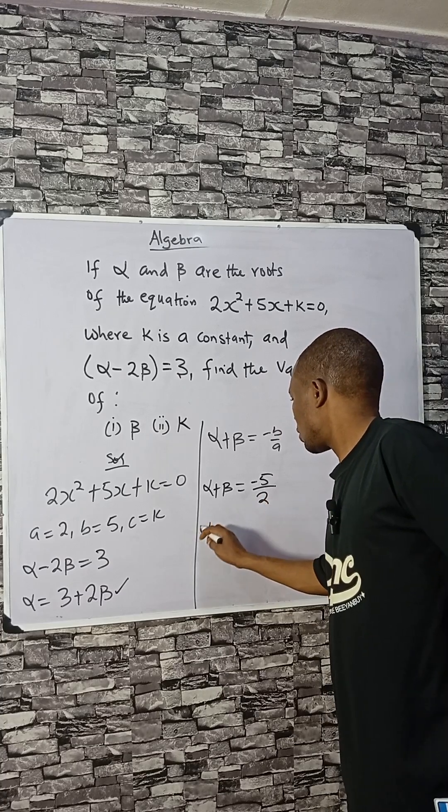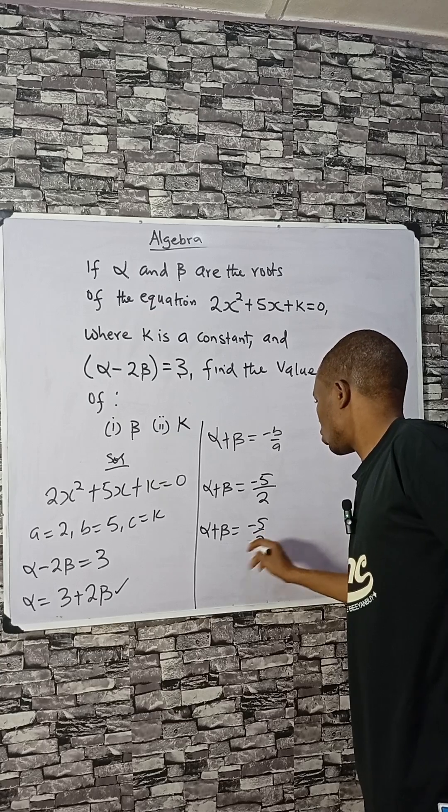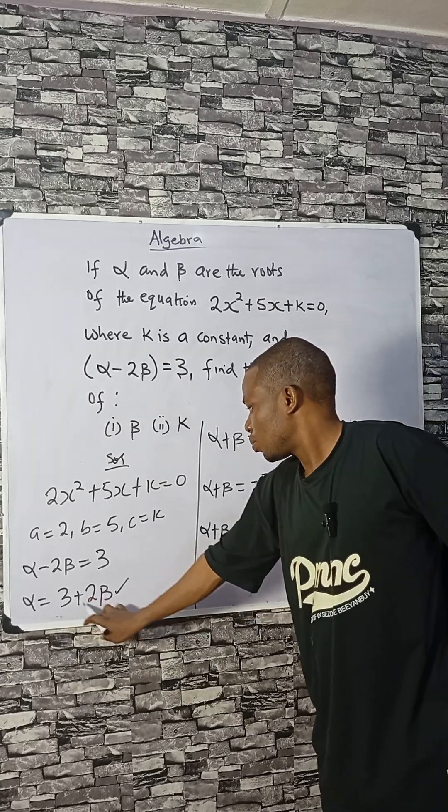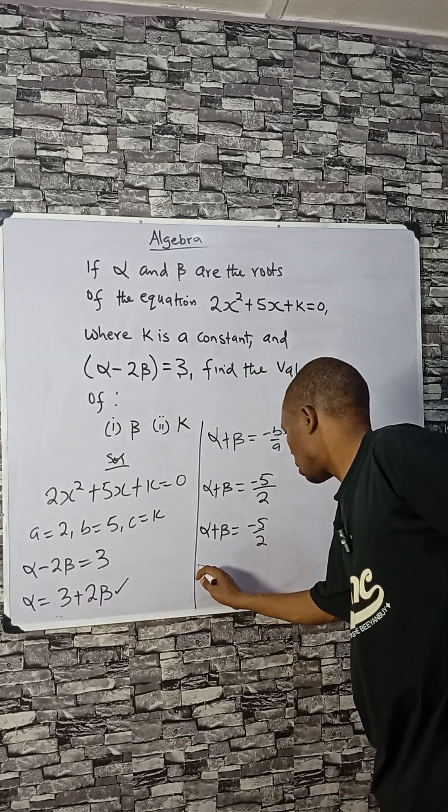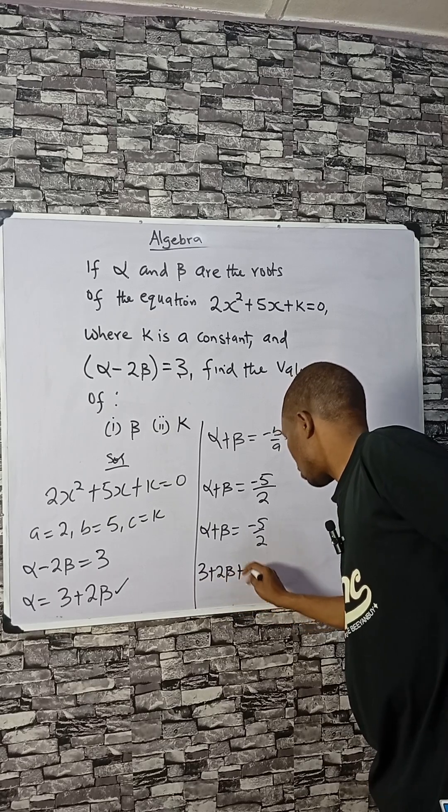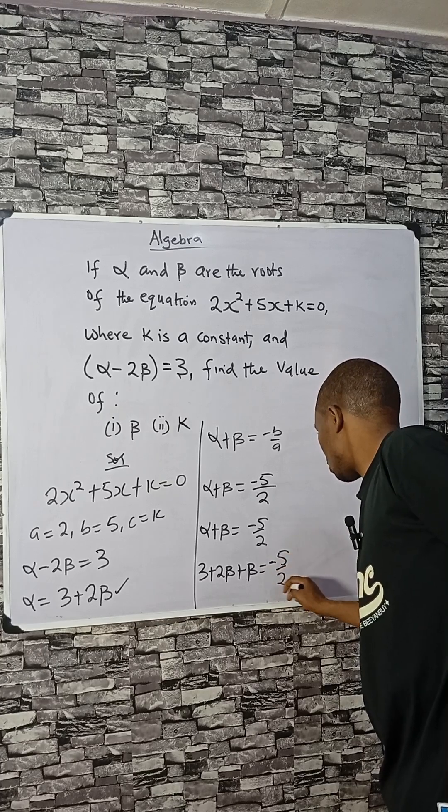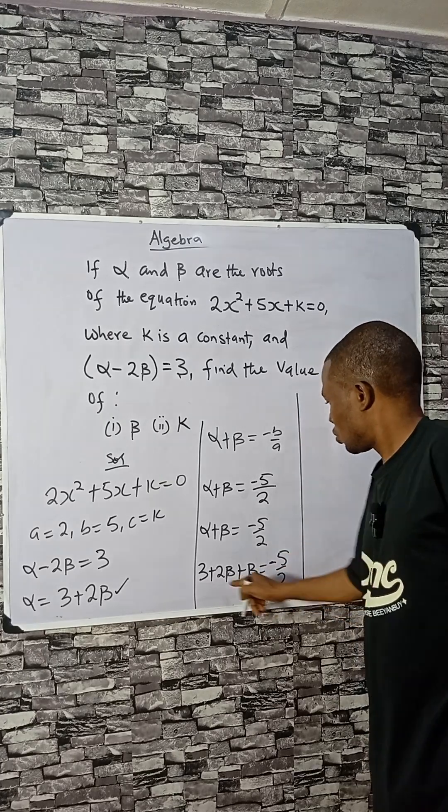So alpha plus beta is minus 5 divided by 2. When alpha is 3 plus 2 beta, we have it as 3 plus 2 beta plus beta equals minus 5 divided by 2. 2 plus 1 here is 3.